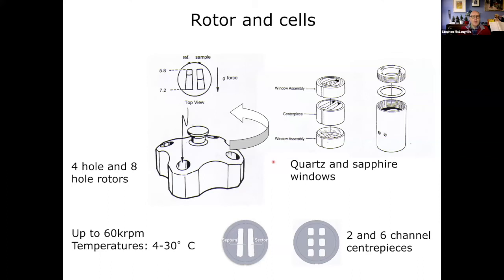For the setup, we need special rotors that have holes in them so you can look through them. They hold cells into which you clamp an assembly with a centerpiece that holds the sample, clamped between two windows. You can get different types of centerpieces — a two-sector or six-sector centerpiece, plus a variety of other specialized ones.